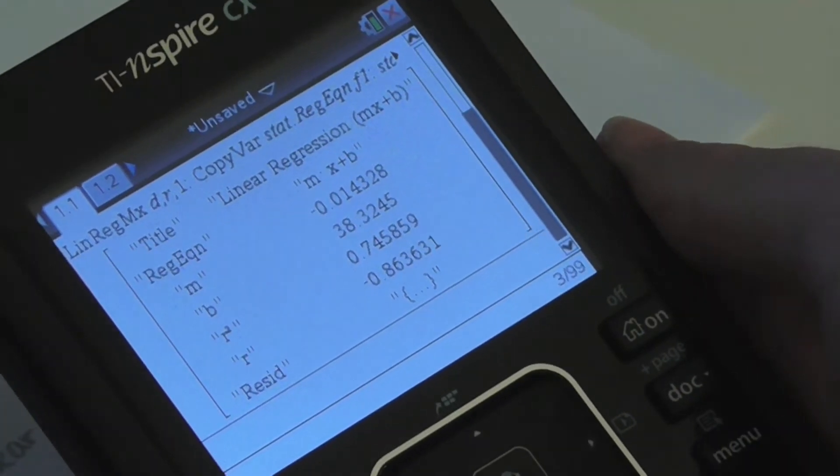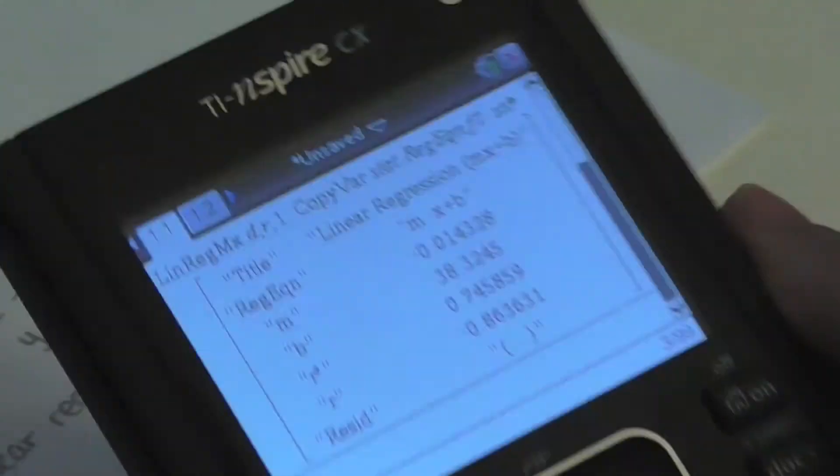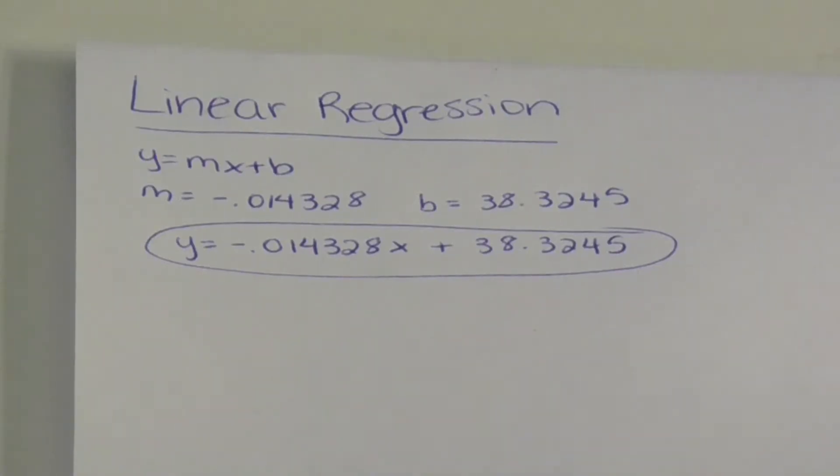Taking these m and b values, we formed an equation in slope-intercept form, which is y equals mx plus b. With that, we got y equals negative 0.014328x plus 38.3245.